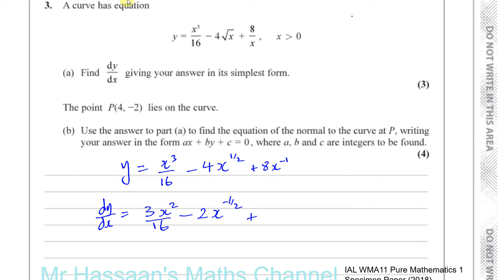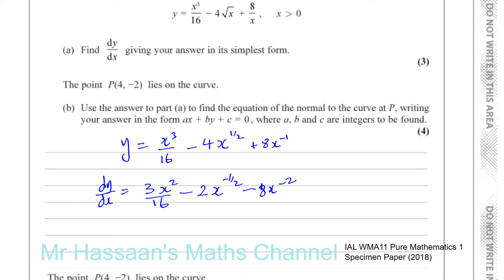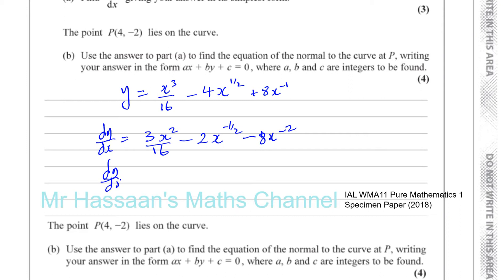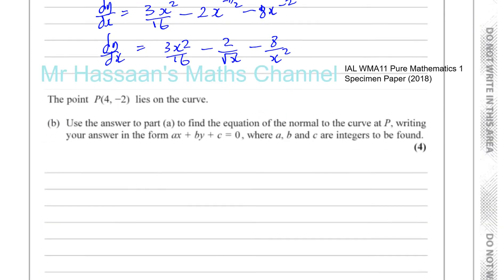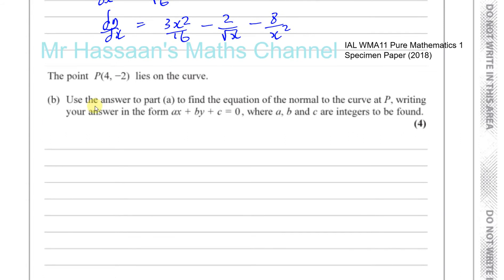Then minus one times eight is minus eight, giving x to the power of minus two. Leaving the answer in index form is perfectly fine and considered simplest form, but I'll also write it as: 3x squared over 16 minus 2 over the square root of x minus 8 over x squared. We multiplied by the power and took one away from the power in each case — that's the answer to part a.